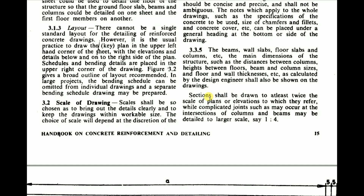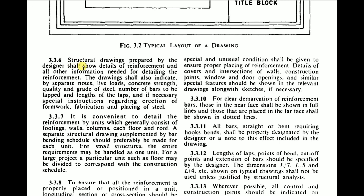Main dimensions of the structure — such as distance between columns, height between floors, beam and column sizes, and floor and wall thickness — calculated by the design engineer shall also be shown on the drawing. Sections, if provided, need to be drawn to at least twice the scale of the plans or elevations to which they refer, while complicated joints such as at the intersection of columns and beams may be detailed to a larger scale, say 1:4. The structural drawing shall also show details of reinforcement and other information needed for detailing, and indicate by separate notes the live load, concrete strength, grade of steel, number of bars to be lapped, lap length, and any special instructions.